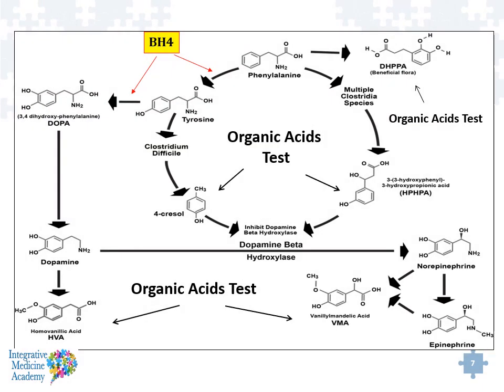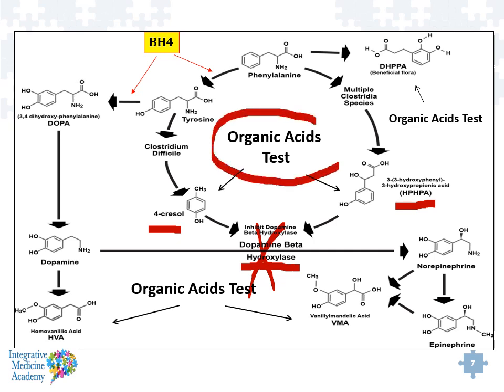Here is our metabolic pathway linking tyrosine and phenylalanine to dopamine. Dopamine is converted to norepinephrine through the actions of dopamine beta-hydroxylase. And there are many things that can inhibit the activity of dopamine beta-hydroxylase, including the presence of bacterial toxins from Clostridia bacteria — one is called 4-cresol, another is called HPHPA. These are all identifiable off the organic acids test. Tyrosine is also part of this equation. Tyrosine gets converted normally to DOPA, and DOPA to dopamine.